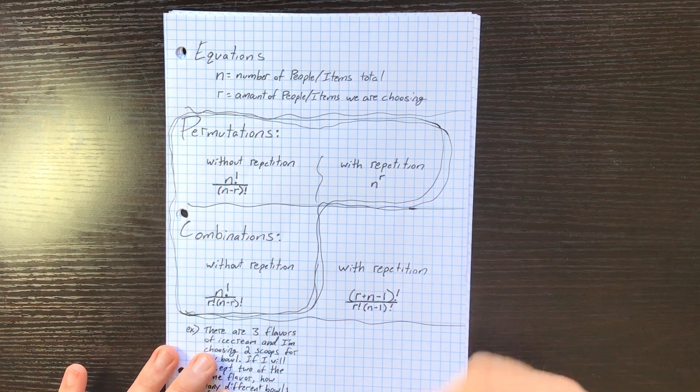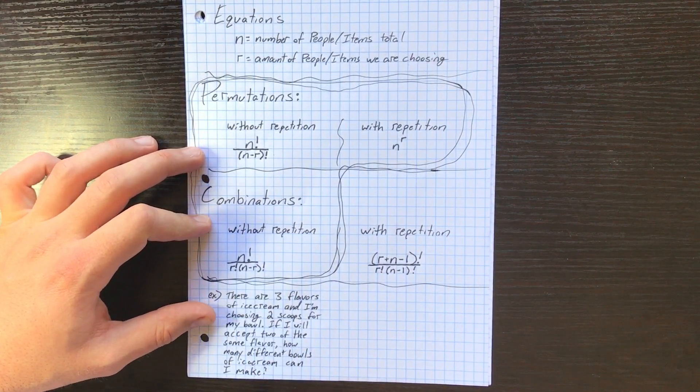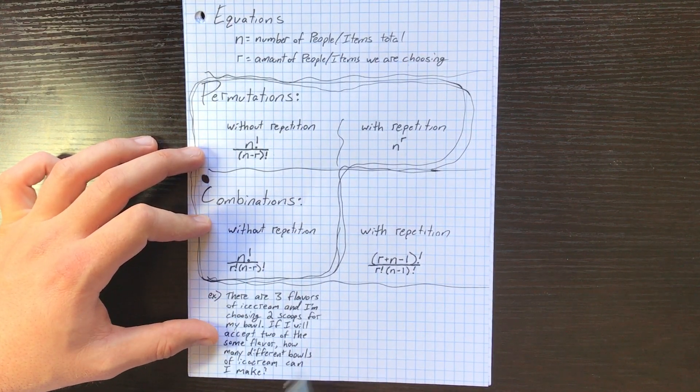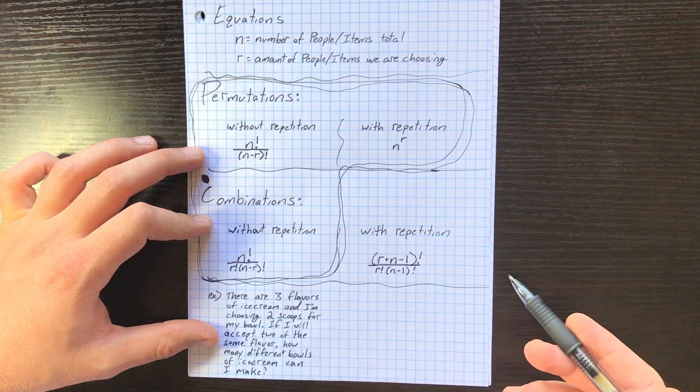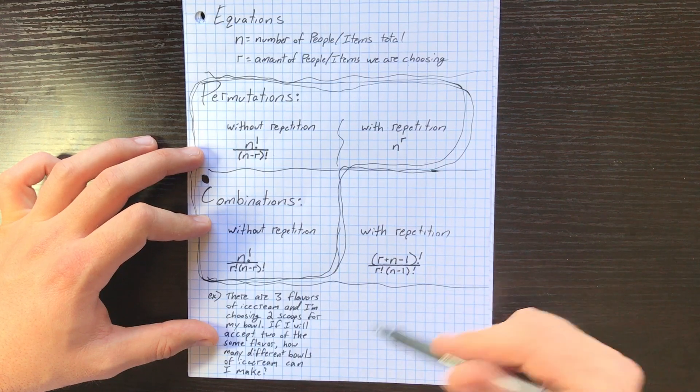Yeah, this could happen, but once you get to this stage - a combination with repetition - in my mind you're almost better off just kind of pounding through it. Like, check this out: there are three flavors of ice cream and I'm choosing two scoops for my bowl. If I will accept two of the same flavor, how many different bowls of ice cream can I make?